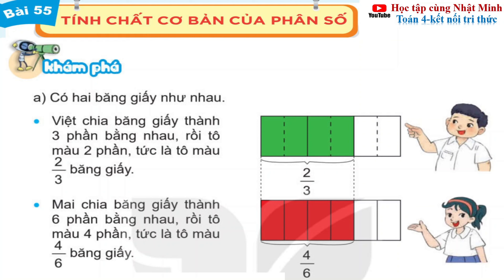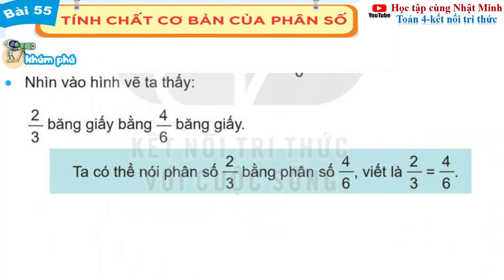Phần khám phá câu A có 2 băng giấy như sau. Việc chia băng giấy thành 3 phần bằng nhau rồi tô màu 2 phần tức là tô màu 2 phần 3 băng giấy. Mai chia băng giấy thành 6 phần bằng nhau rồi tô màu 4 phần tức là tô màu 4 phần 6 băng giấy. Nhìn vào hình vẽ ta thấy 2 phần 3 băng giấy bằng 4 phần 6 băng giấy. Ta có thể nói phân số 2 phần 3 bằng phân số 4 phần 6, viết là 2 phần 3 bằng 4 phần 6.